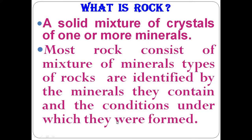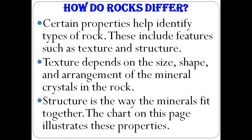Types of rocks are identified by the minerals they contain and the conditions under which they were formed. Based on that, we can find out the different types of rock and also the conditions under which they were formed.